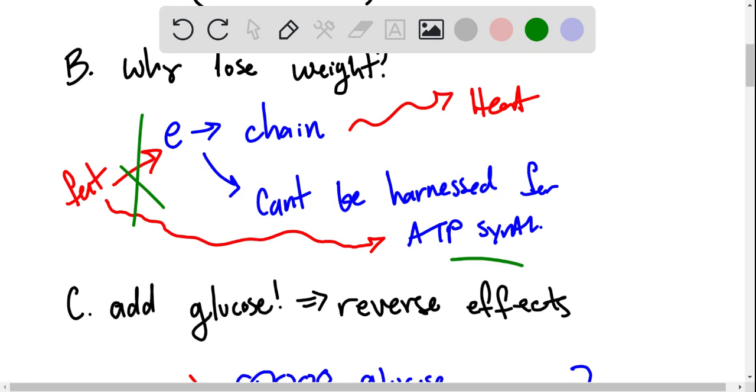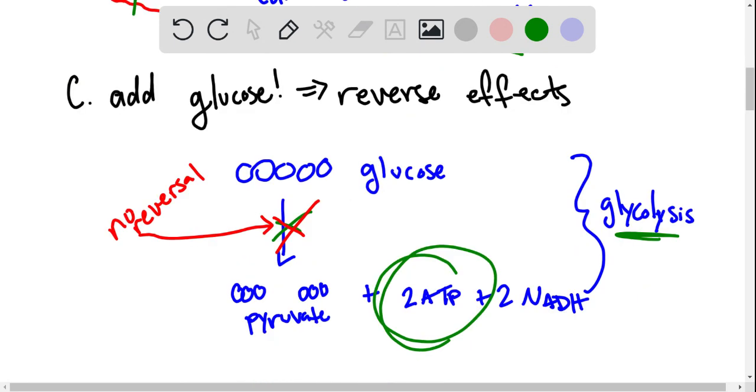So that process will chill, essentially. It won't happen. But if we do indeed add the 2-deoxyglucose, which inhibits glycolysis, then we don't get the ATP, and the effects of the DNP will continue to exist.